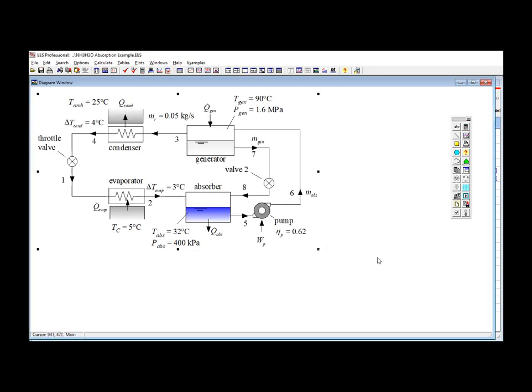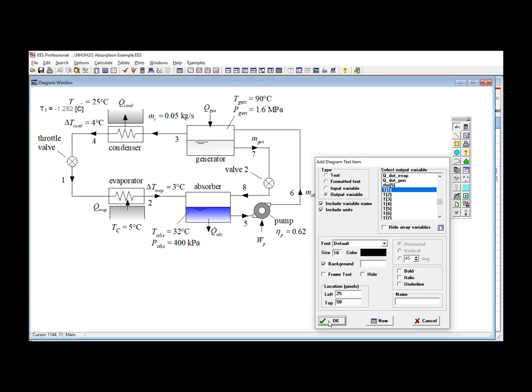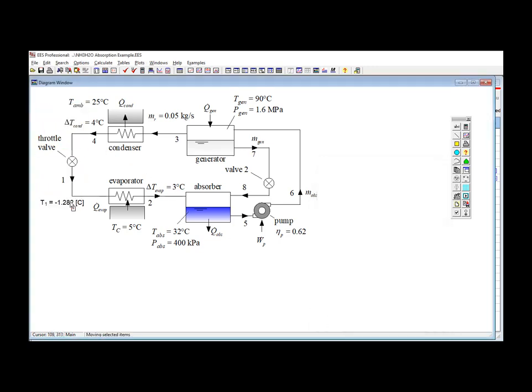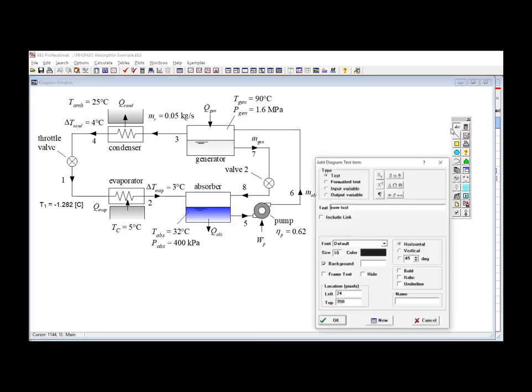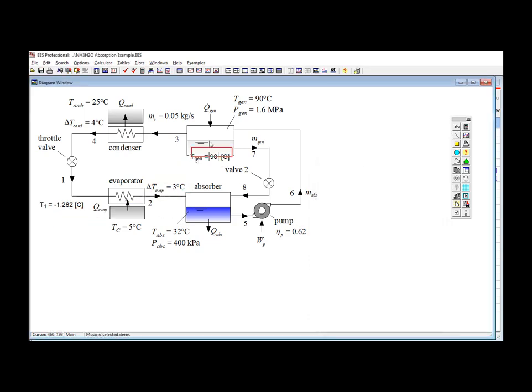So I am going to paste a picture of the cycle into the window. And this picture will become the graphical user interface that I am going to use to examine and control the program. So I can add indicators here that show the state points. Here I am just going to show the temperature at state 1 and I do that by selecting the text tool and then an output variable and finding T1. I can also add controls that actually set the values of the variables in EES. So for example I can add an input variable for Tgen here. Of course if I am setting Tgen from the diagram window then I can't also set it in the equations window. So I have to remove the equation that sets Tgen in EES.